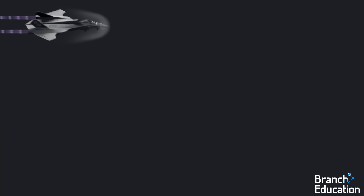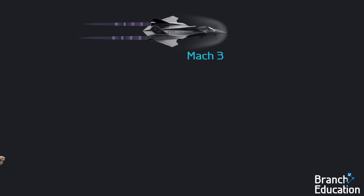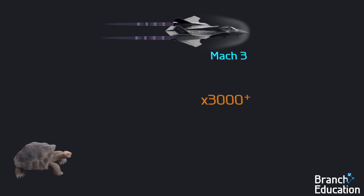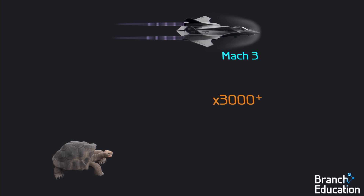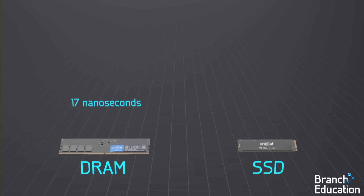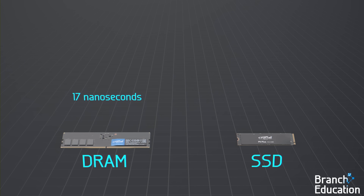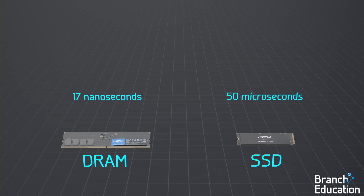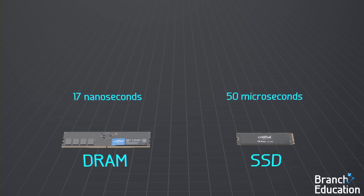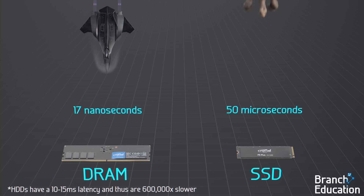For comparison, a supersonic jet going at Mach 3 is around 3,000 times faster than a moving tortoise, so the speed of 17 nanosecond DRAM versus 50 microsecond SSD is like comparing a supersonic jet to a tortoise.